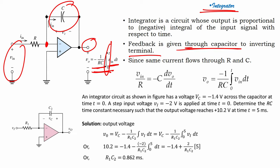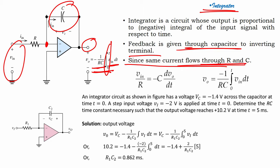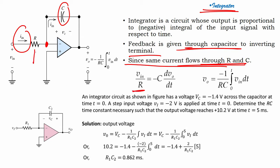Since the same current flows through R and C — current I1 flows through R and C — the same current Iin flows through both. If I want to measure the current here, it will be Vin divided by R, so Iin = Vin/R.